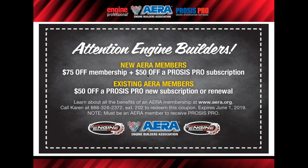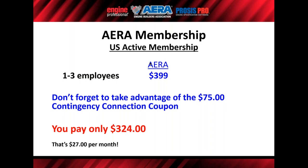The contingency connection coupon booklet contains manufacturer discounts. For example, AERA has a $50-off coupon for renewals, and new members can get $50 or $75 off membership, or $50 off a Process Pro subscription. A typical US active shop using the coupon booklet pays only $324 per year, or $27 per month through our monthly payment program with no service fees.